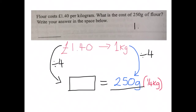So £1.40 divided by four: four into one does not go, four into fourteen goes three times with two left over, and four into twenty goes five times. So the price of 250 grams of flour would be 35p.